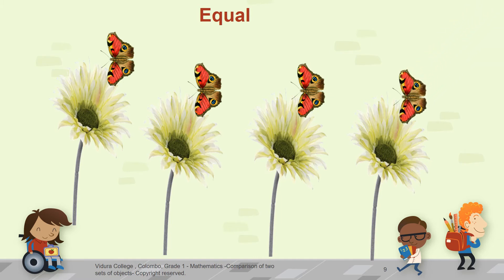Look at these butterflies and flowers. You can see that they are equal to each other. So, we know now three words. More, less and equal.